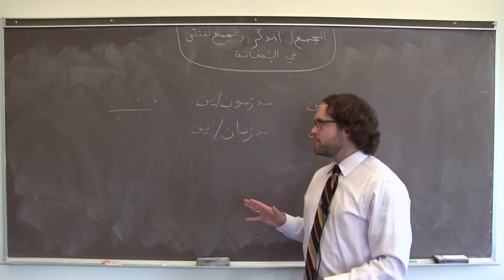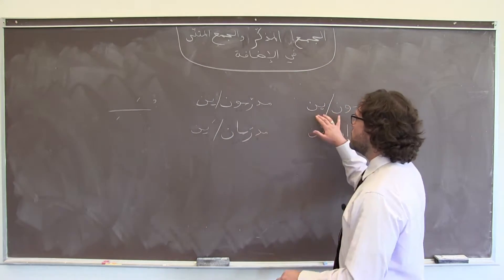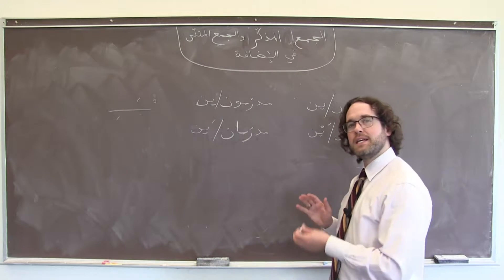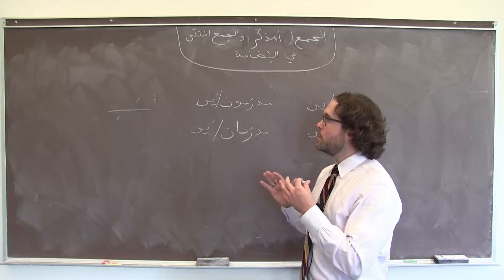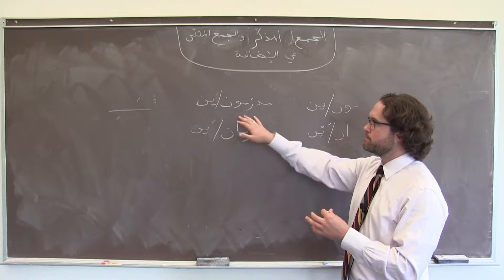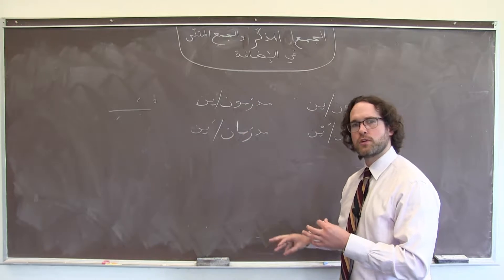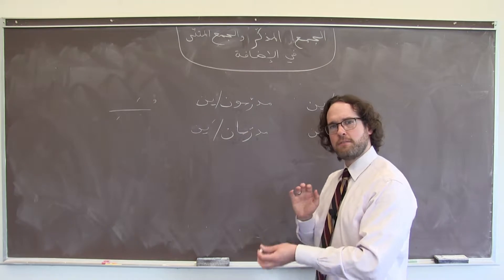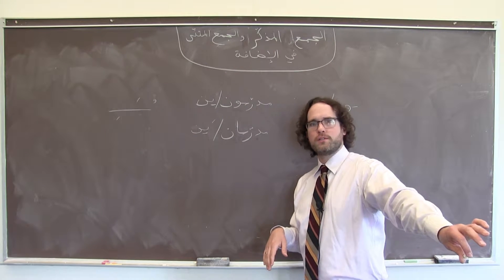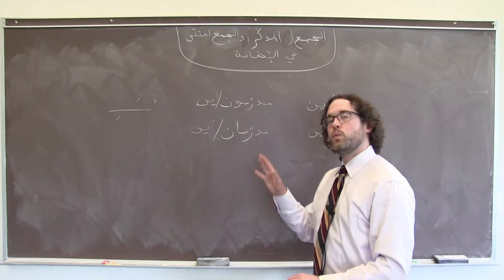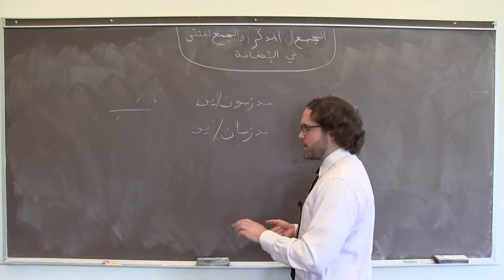When we have a word that is made dual or plural with one of these structures in an إضافة before the end, or if we have a word made plural or dual with one of these structures that has a pronoun suffix attached to it — my two books, his two dogs, et cetera — then we need to drop the نون. Again, this is in formal Arabic.